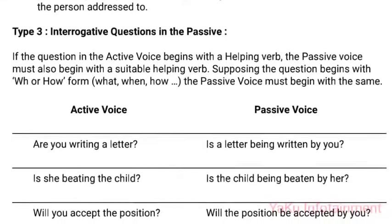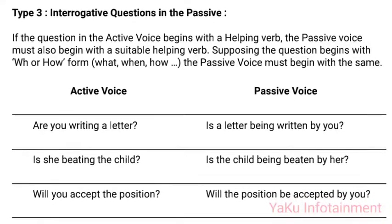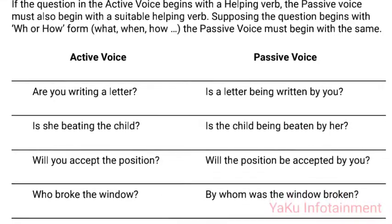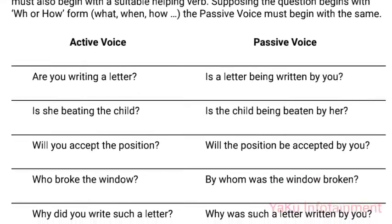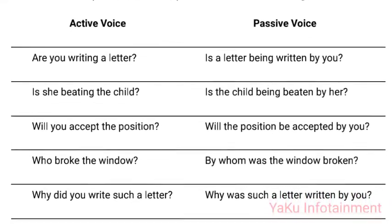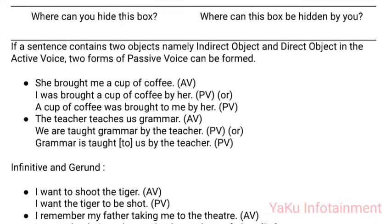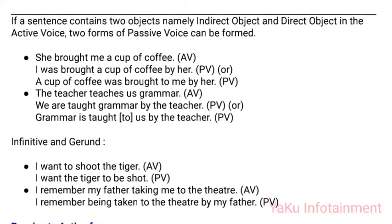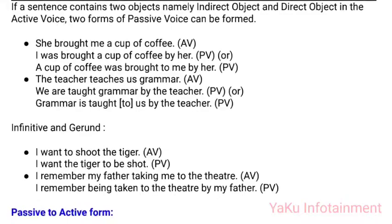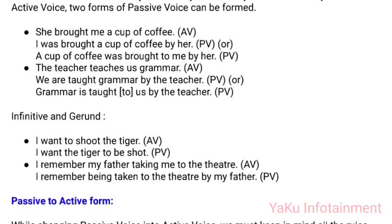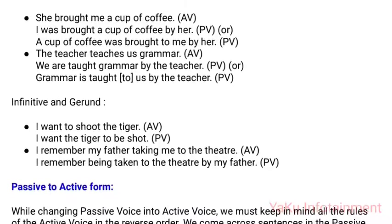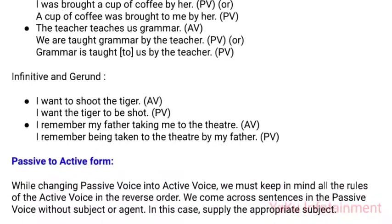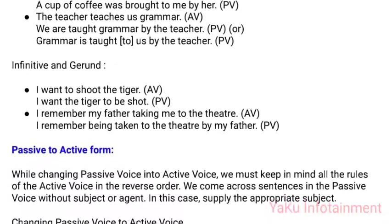Type 3 — Interrogative questions in passive voice: If the question in active voice begins with a helping verb, the passive voice must also begin with a suitable helping verb. If the question begins with wh- or how, the passive voice must begin with the same. Examples: 'Are you writing a letter?' → 'Is a letter being written by you?' 'Is she beating the child?' → 'Is the child being beaten by her?' 'Will you accept the position?' → 'Will the position be accepted by you?' 'Who broke the window?' → 'By whom was the window broken?' 'Why did you write such a letter?' → 'Why was such a letter written by you?' 'Where can you hide this box?' → 'Where can this box be hidden by you?' If a sentence contains two objects (indirect and direct), two forms of passive voice can be formed: 'She brought me a cup of coffee' → 'I was brought a cup of coffee by her' or 'A cup of coffee was brought to me by her.' 'The teacher teaches us grammar' → 'We are taught grammar by the teacher' or 'Grammar is taught to us by the teacher.'